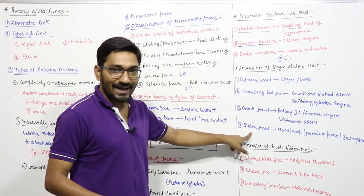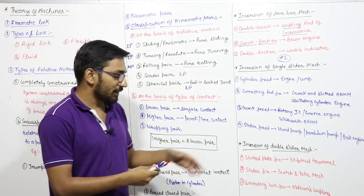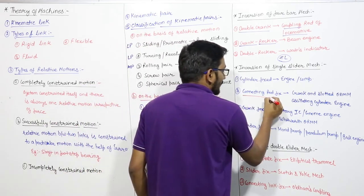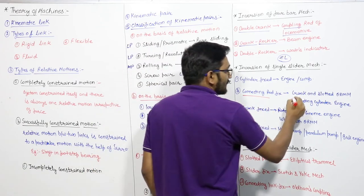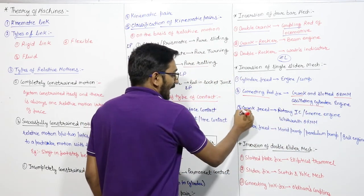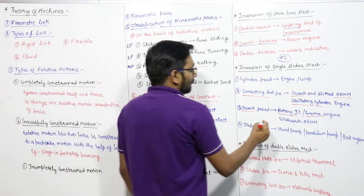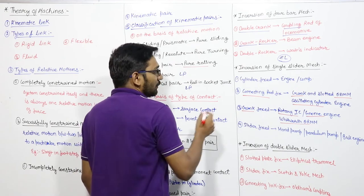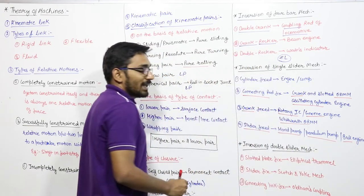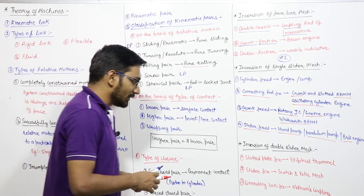For the single slider mechanism there are four links: cylinder, connecting rod, crank, and slider. Fixing the cylinder gives an engine or compressor. Fixing the connecting rod gives two inversions: the crank and slotted quick return motion mechanism, and the oscillating cylinder engine. Fixing the crank gives the rotary IC engine (or gnome IC engine) and the Whitworth quick return motion mechanism.